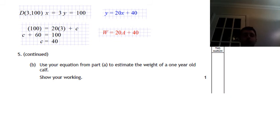Part B. Use your equation from part A to estimate the weight of a one year old calf. Now when this one was marked in the final exam, a lot of people wrote 20 times 1 plus 40, which doesn't make much sense. Because then it's 60 kilograms. You look back in the graph, it wouldn't make much sense.